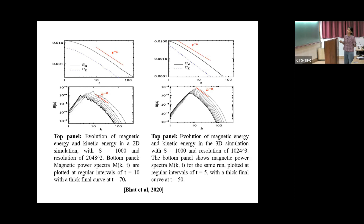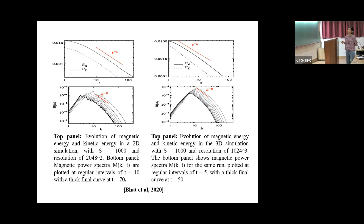In both the 2D and the 3D non-helical decaying turbulent system, the magnetic energy decays with a power law in time with a slope of t to the power minus one. The peak of the magnetic power spectrum shifts from larger wave number to smaller wave number — the dark curve denotes later time — both in 2D and 3D.